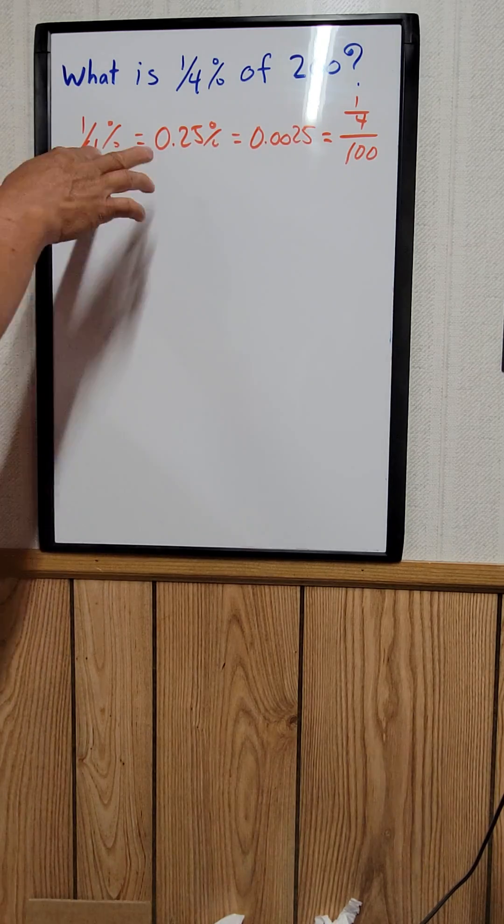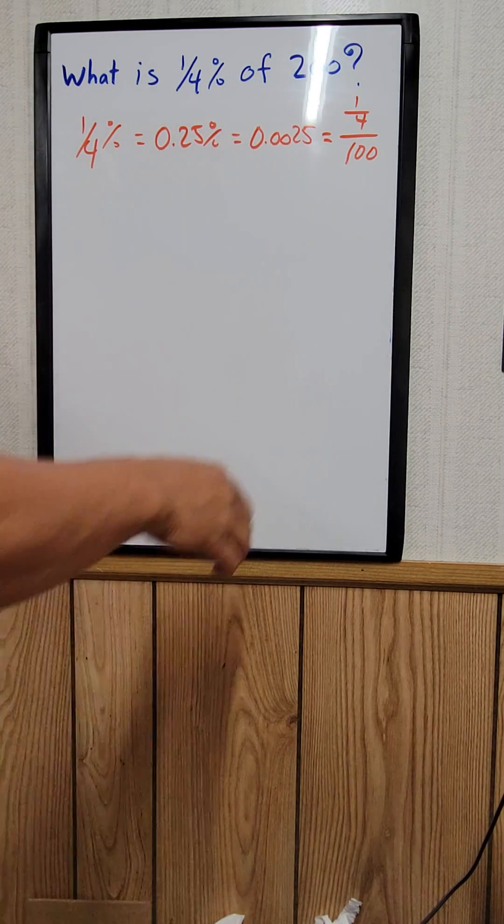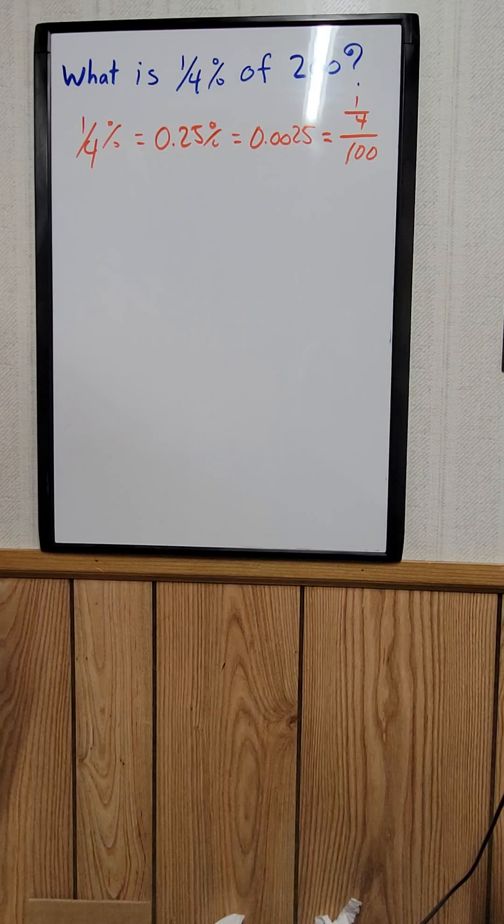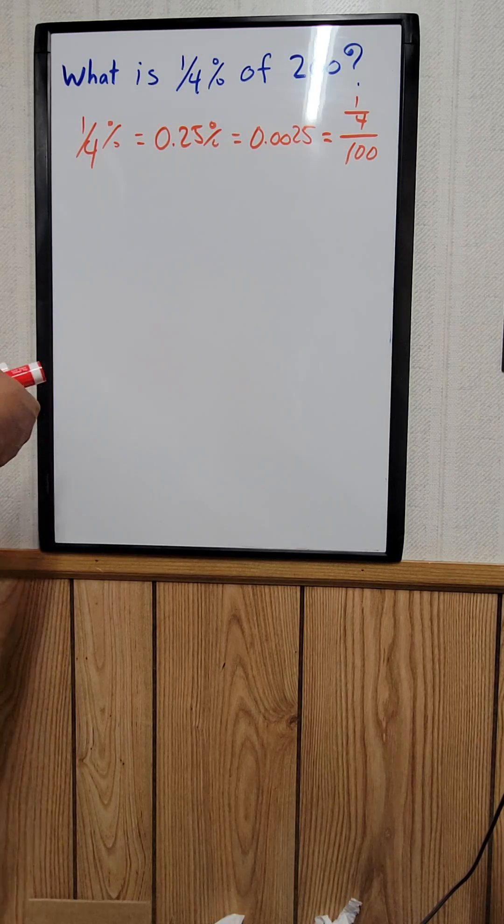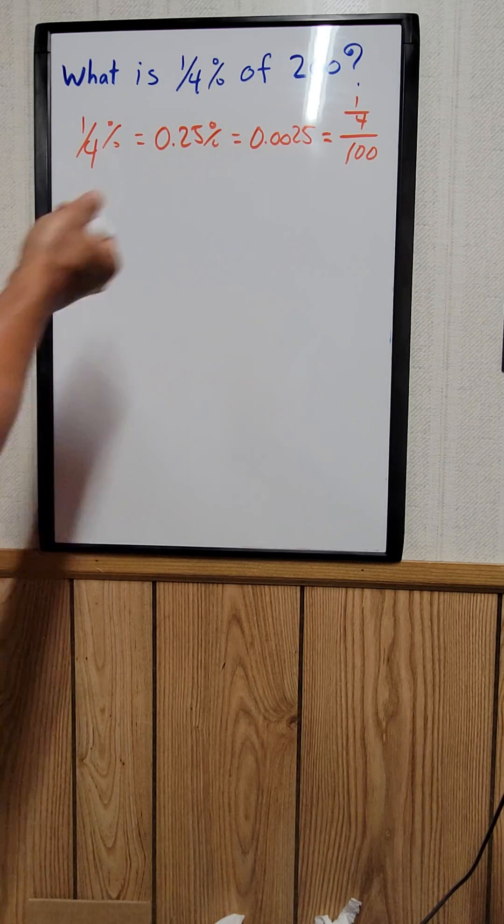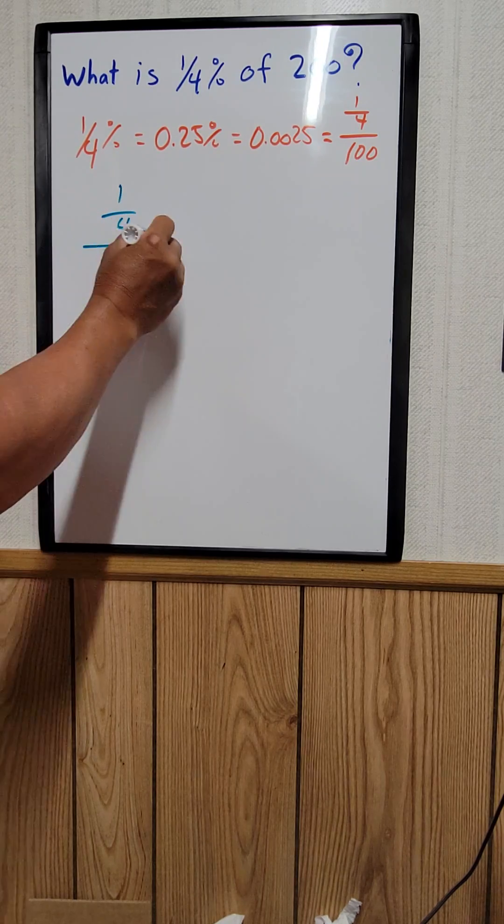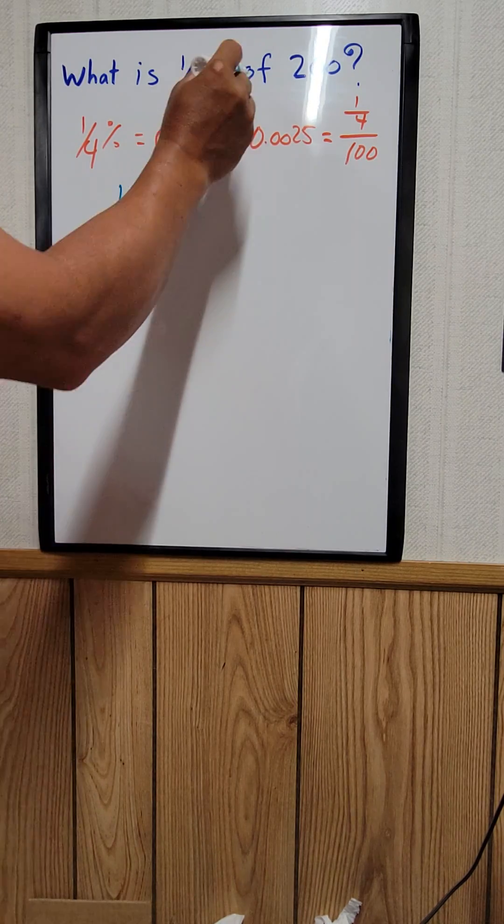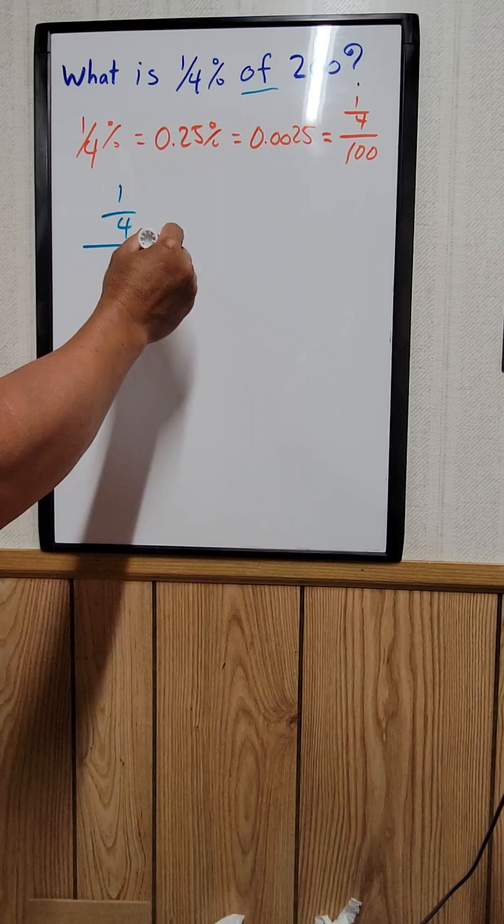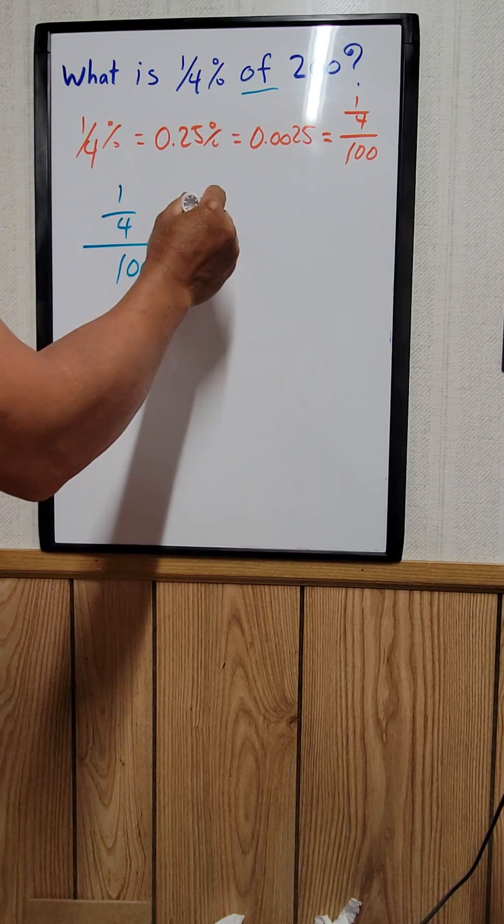So I don't know which one you want to use, but for me, I would just like to use the last one, the fraction form. So what I would do, I would say one over four divided by one hundred, of, the word of, times two hundred,